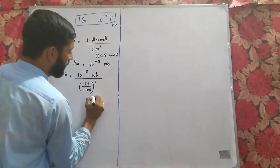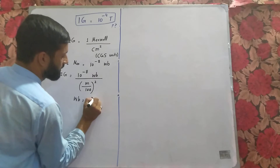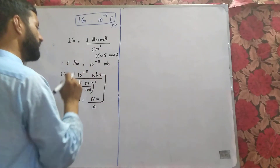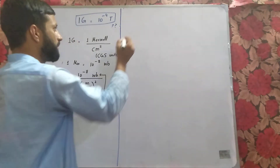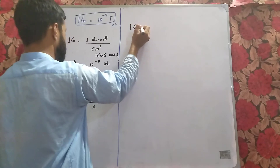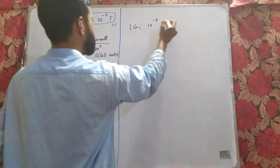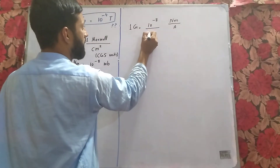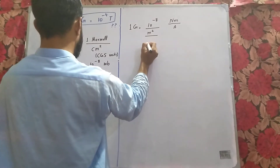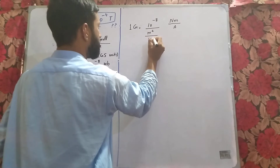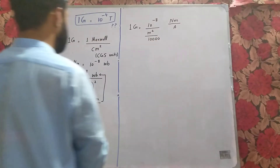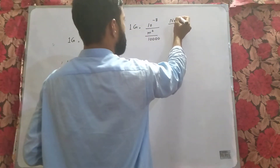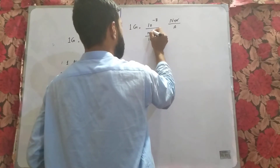We will plug in Weber equals Newton meter per ampere. So one Gauss becomes 10 raised to power minus 8, and Weber is replaced by Newton meter per ampere, divided by meter over 100, whole squared. This gives us 100 squared in the denominator. The meter terms cancel out with meter squared.